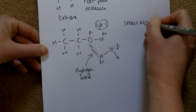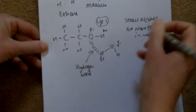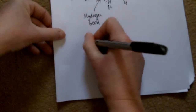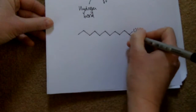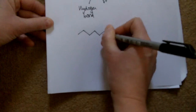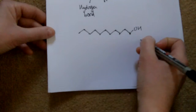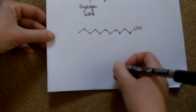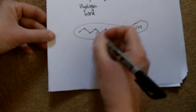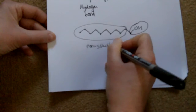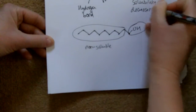Only small alcohols are very soluble in water. For a very long-chain alcohol — for example one with eleven carbons — only the OH part is soluble; the long hydrocarbon chain is insoluble. Therefore, solubility decreases as chain length increases.